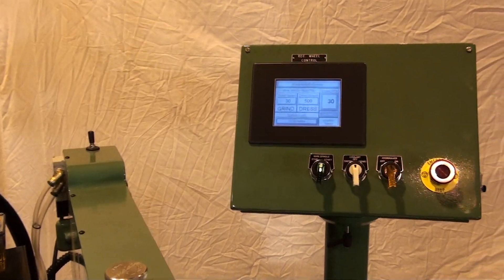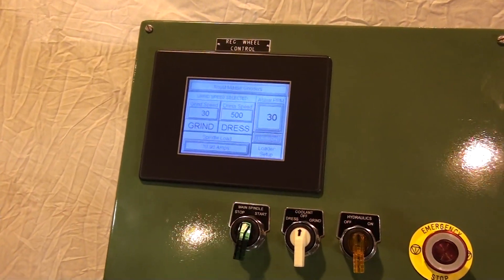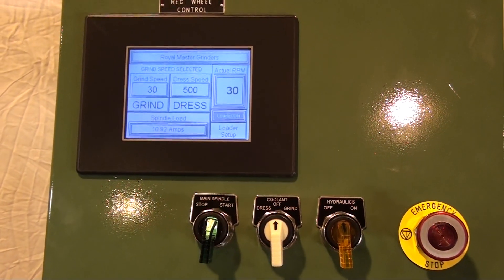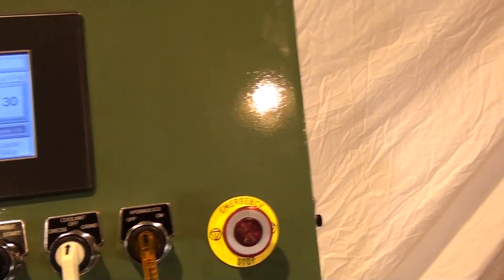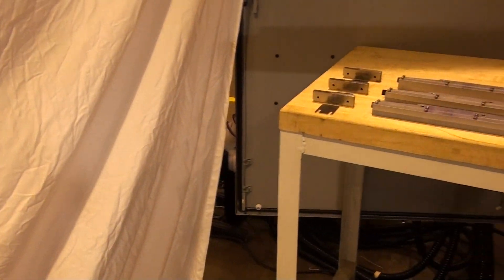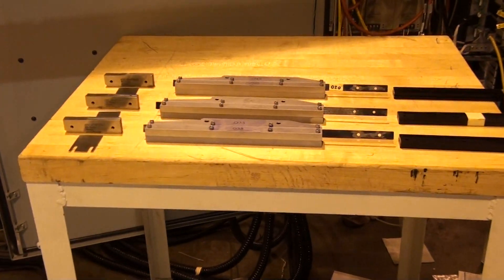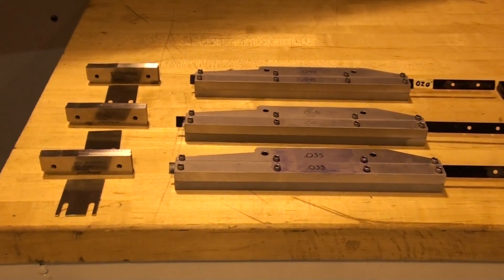Complete changeovers to a different dental file or burr shape take less than one hour. Special grinding wheel and insert plate material selection make for long lasting setups with both nitinol and stainless steel file blanks.